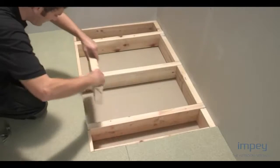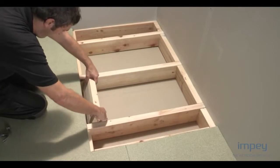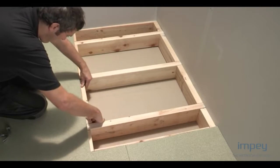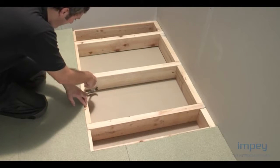You will need to fit noggins to support the edges of the cut floorboards and to provide a timber frame to allow screw fixing around the entire rim of the EasyFit deck.